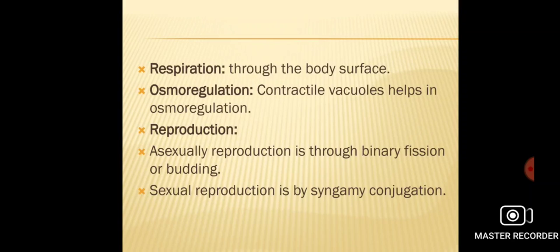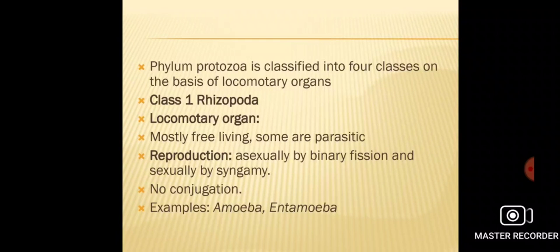Contractile vacuoles are present in the body of protozoans, which perform the function of osmoregulation. In case of protozoans, both sexual and asexual reproductions are seen. Asexual reproduction takes place by binary fission or budding, while sexual reproduction takes place by conjugation or syngamy.